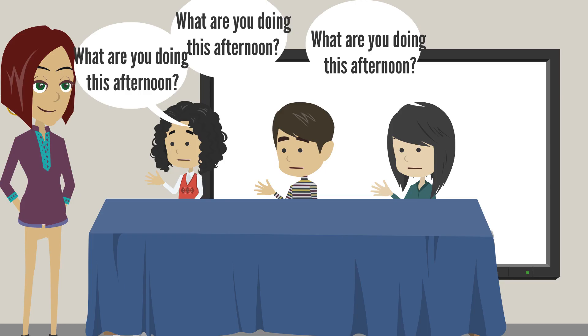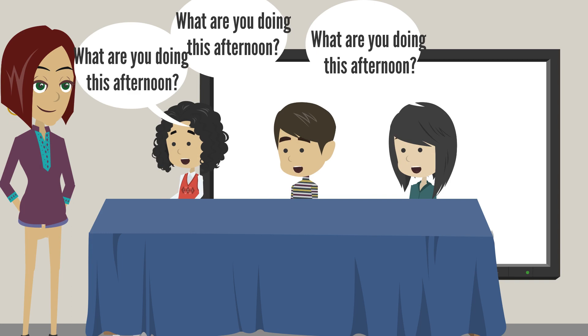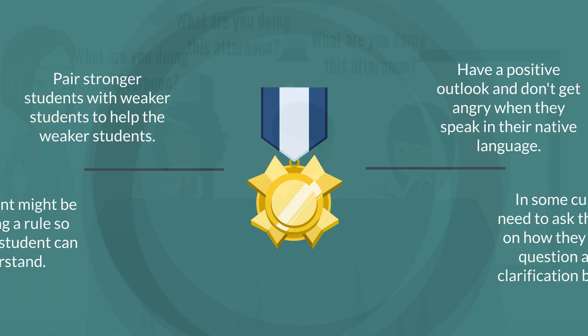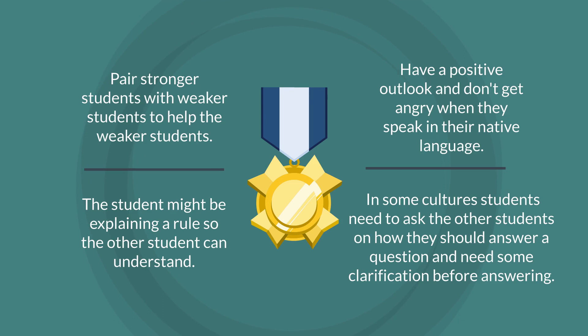Another way to increase student talk time is through group work, where students are actually working together, talking and conversing in English. This will help their listening and speaking skills. Pair stronger students with weaker students to help the weaker ones. Have a positive outlook and don't get angry when they speak in their native language — the student might be explaining a rule so the other student can understand. In some cultures, students need to ask other students whether they should answer a question and need some clarification before answering.